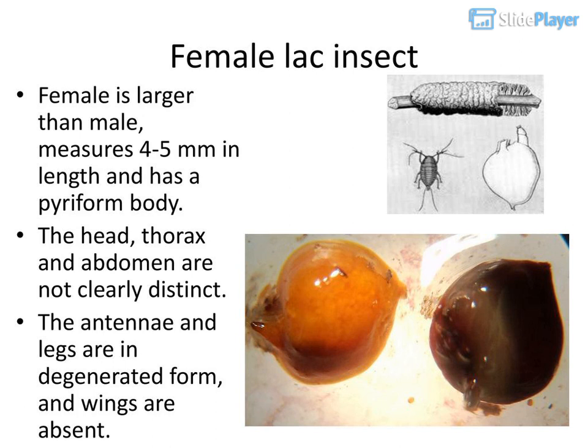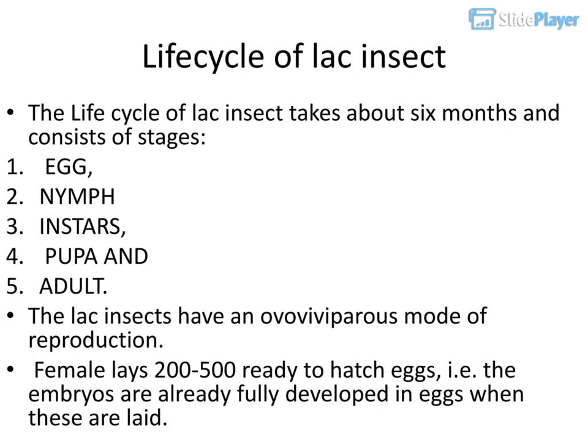The male has reduced antennae, and its thorax bears a pair of hyaline wings. The female LAK insect is larger than the male, measuring 4 to 5 millimeters in length with a piriform body. The head, thorax, and abdomen are not clearly distinct. The antennae and legs are in degenerated form, and wings are absent.